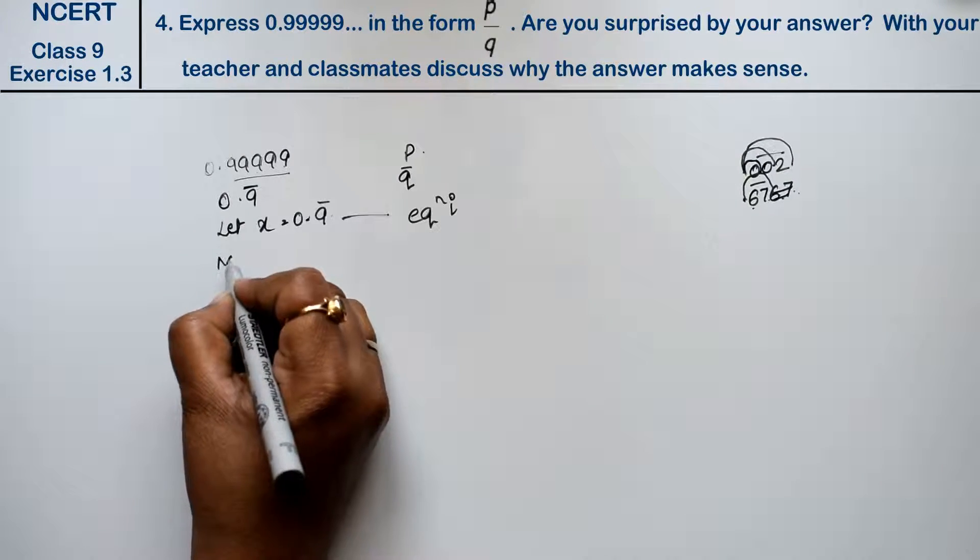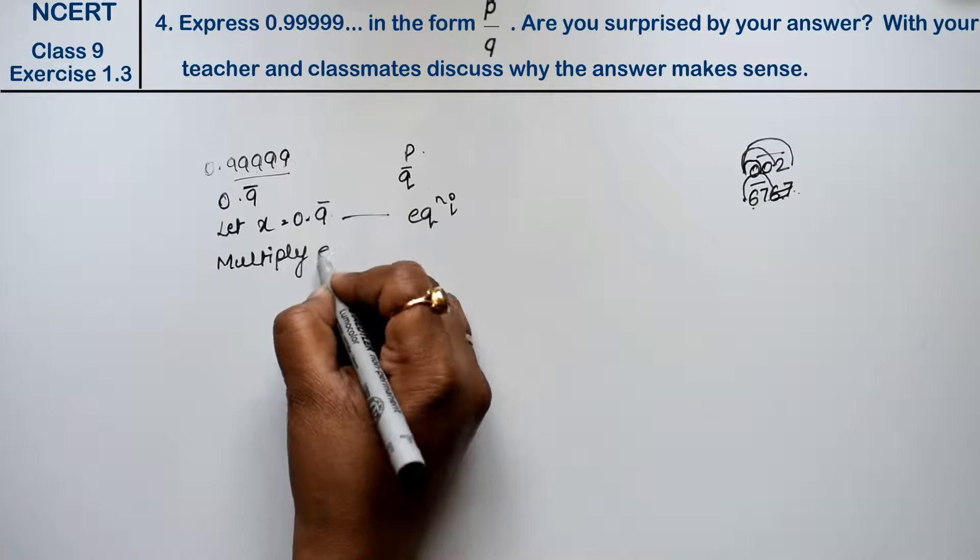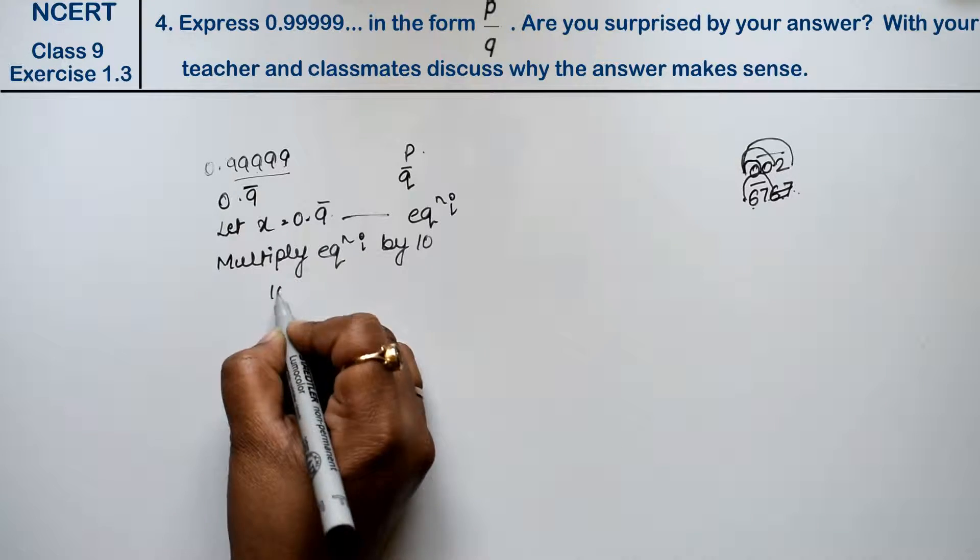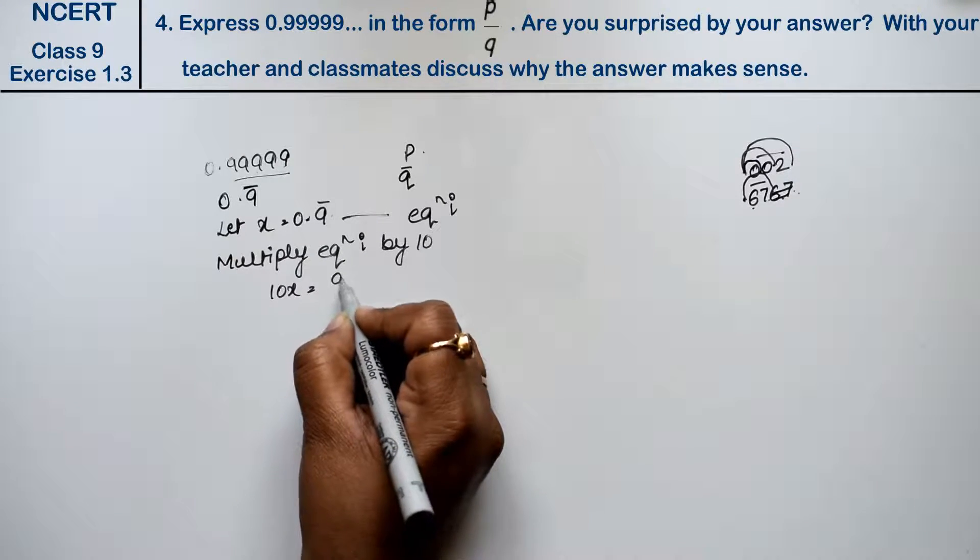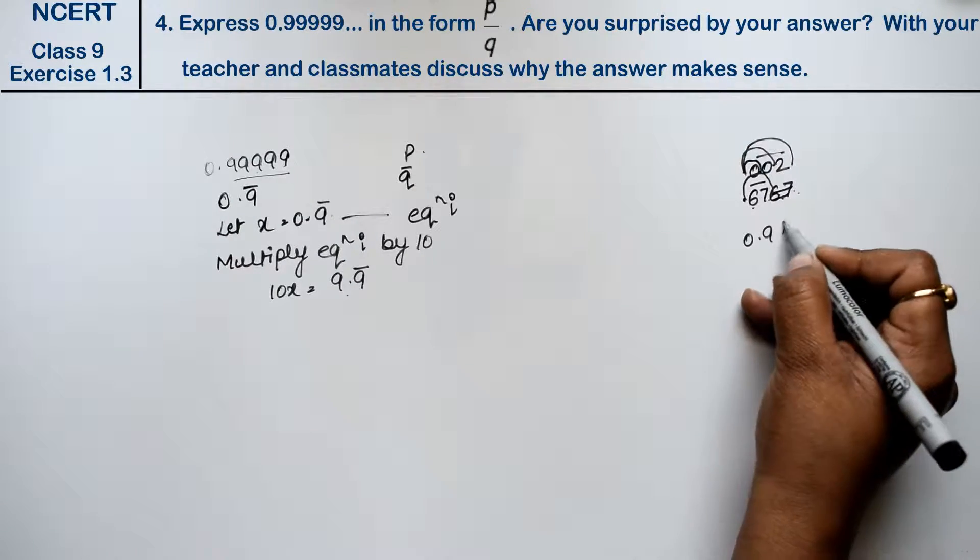So multiply equation first by 10. So this is how much is it? 10x equals to 9.9 bar, that is 9.0.99 bar. So if we multiply by 10, we will move this point here, so this will be 9.9 bar.